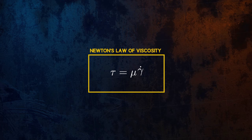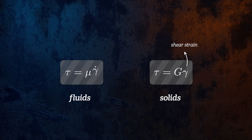This looks a lot like Hooke's law for shear that we see in solids, except instead of being a function of the strain, the shear stress is a function of the rate at which the strain is applied.